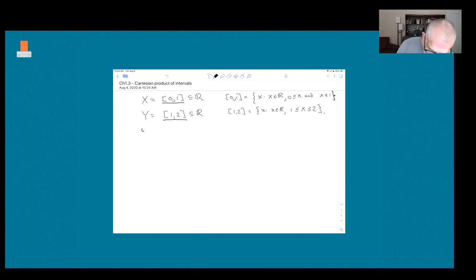And the question is, what does X cross Y, the Cartesian product, look like? Now we can just go back to the definition and we know that the Cartesian product means the collection of ordered pairs (x,y) where x is chosen from the first set and y is chosen from the second set.